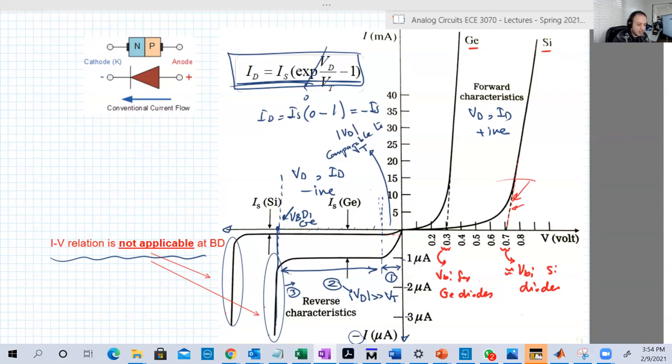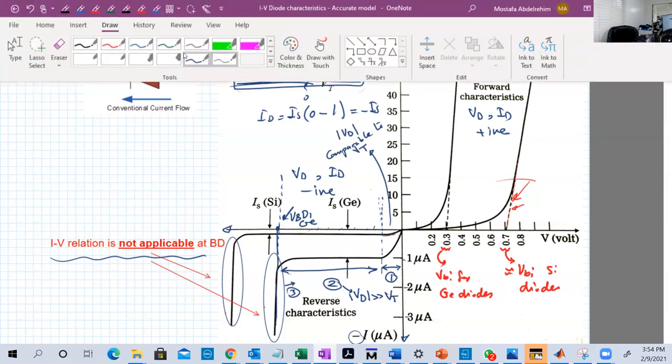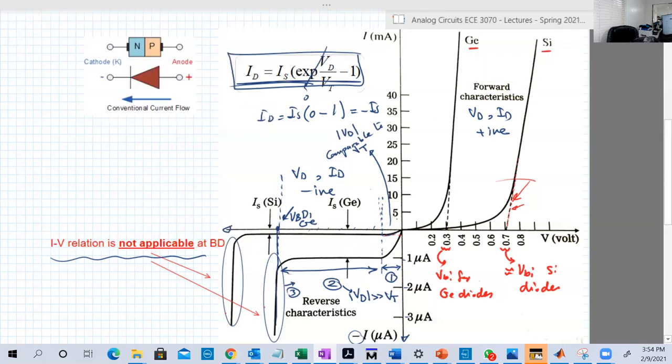We're going to take these observations and apply them to silicon now. Silicon also has a very small region which is region one, maybe smaller than germanium. Then region two is from here to here, and this is minus IS. This is IS for silicon; this is IS for germanium.